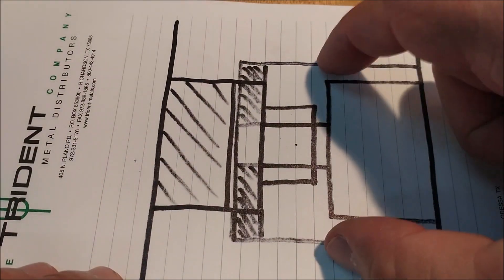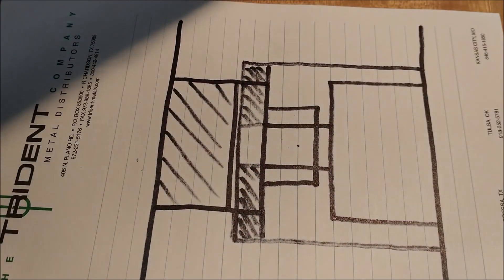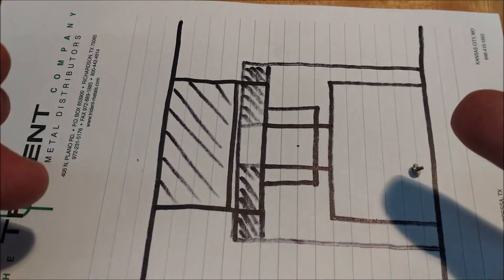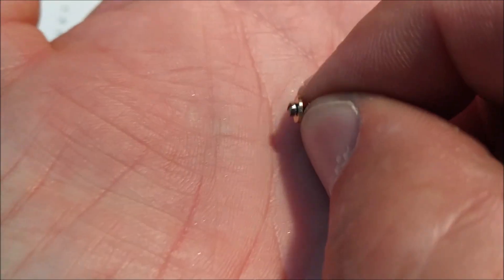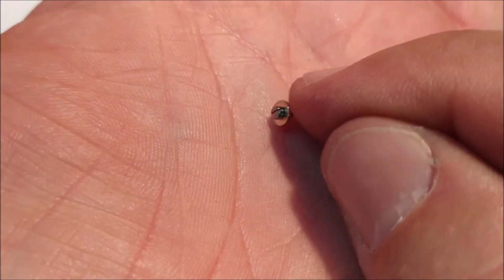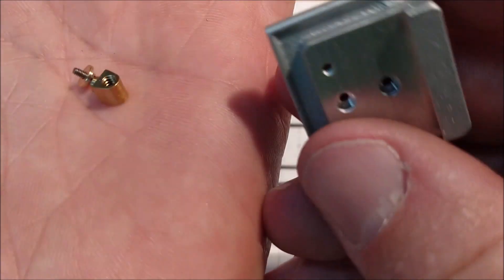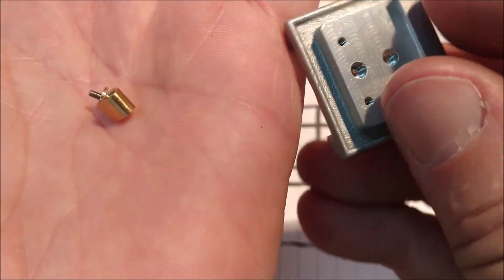And this is a three-sixteenths hole versus a one-eighth hole, so there's about thirty thousandths worth of bite on either side, and we're talking about the screw itself. Hold your breath, don't blow that sucker off the table. There you go, there's the screw, there's the washer, there's the part.